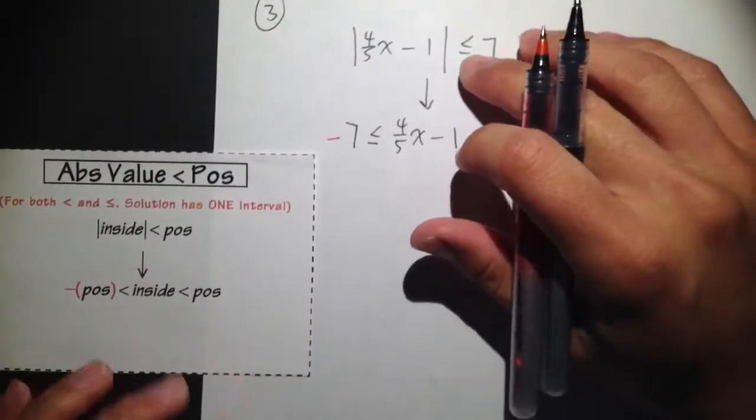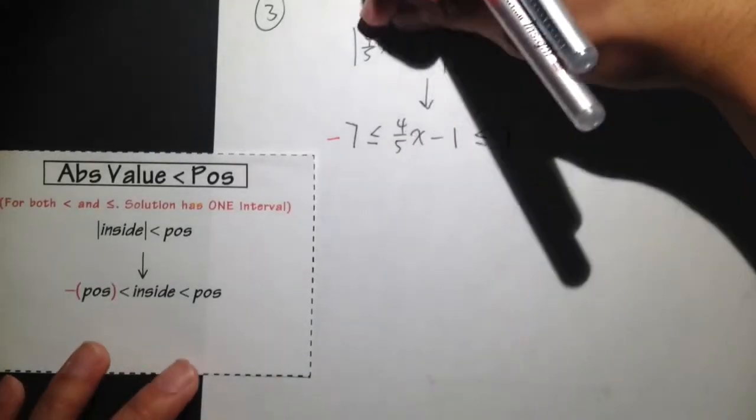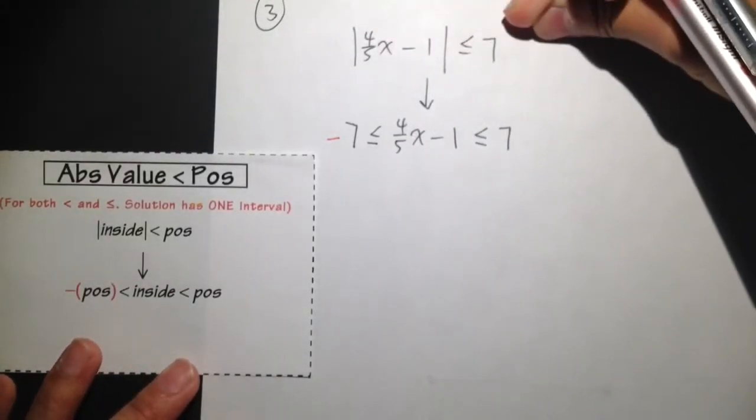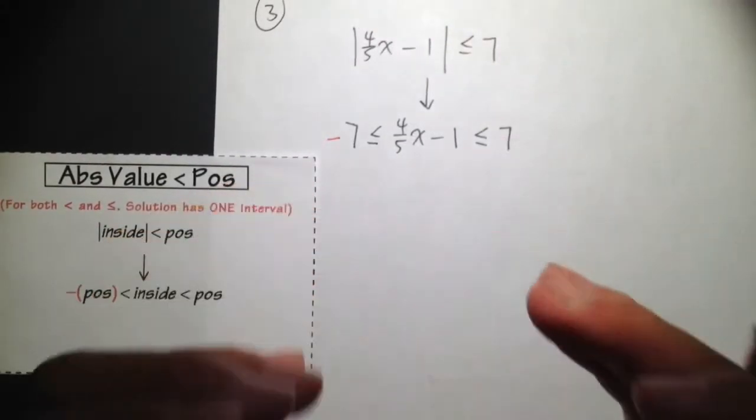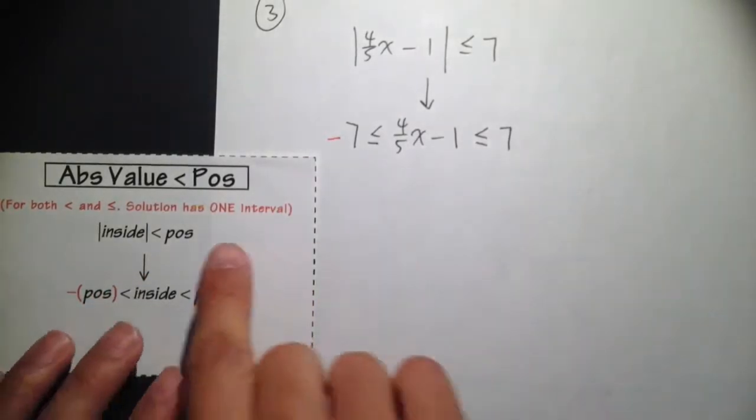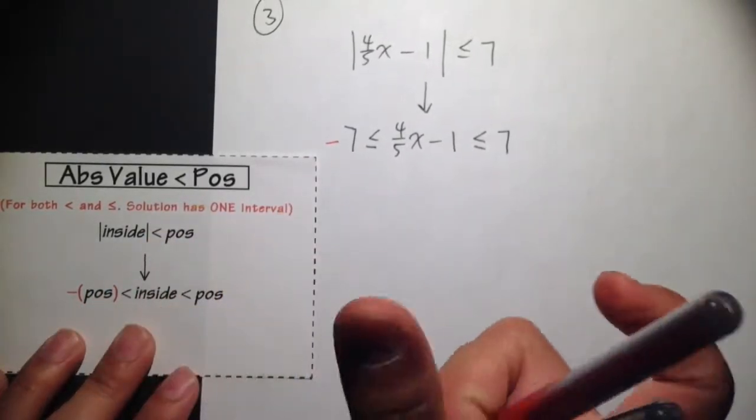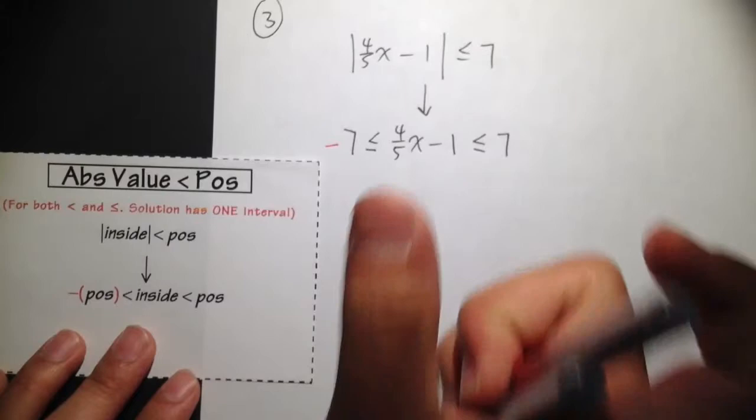Put this in the middle of 7, and then on the left hand side we have negative 7. And then keep in mind, when you are dealing with less than case, absolute value is less than a positive number. At the end, for the graph, you should just have one piece graph, just one segment, one interval.